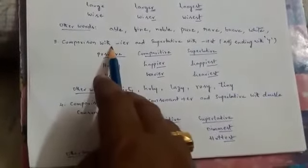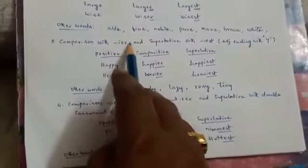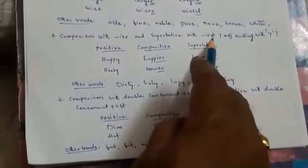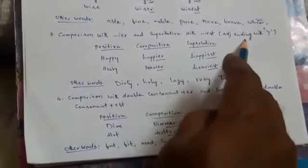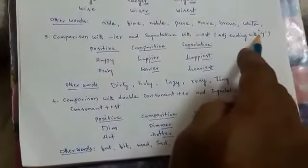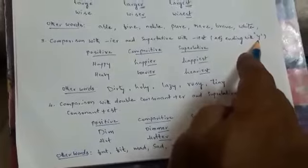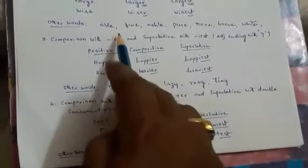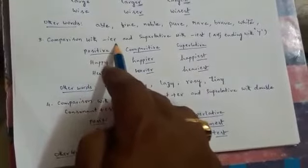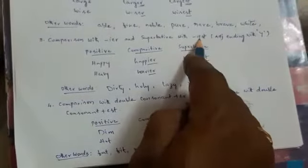So, third model: comparison with IER and superlative with IEST. Particularly, adjectives ending with Y. So, wherever an adjective ended with Y, to change its comparative by deleting Y, you added IER and for superlative IEST.